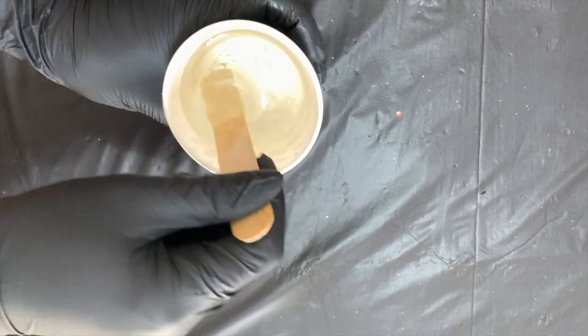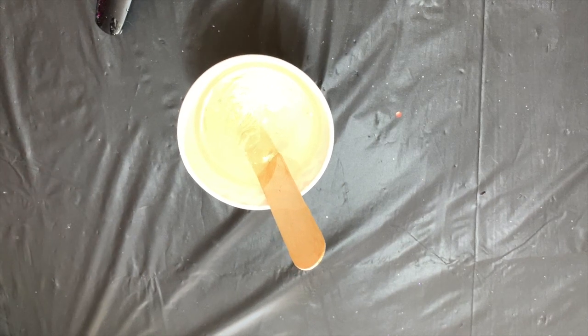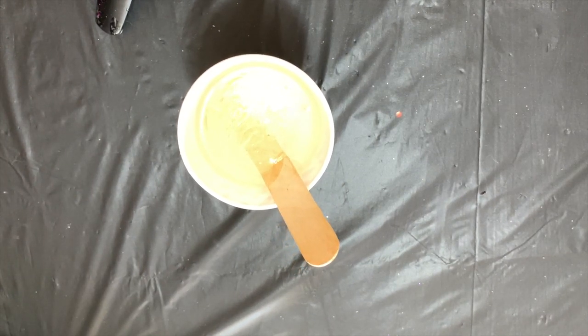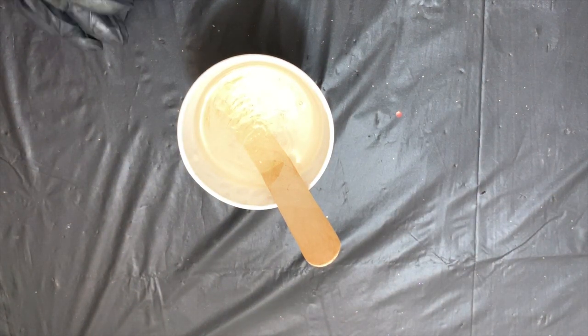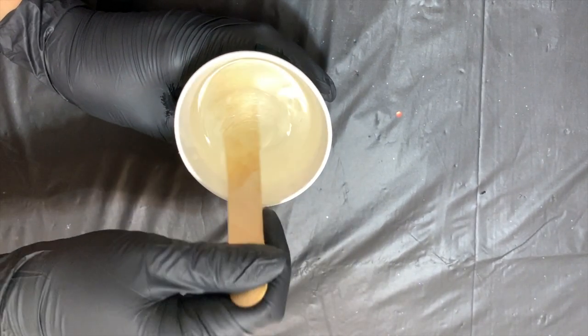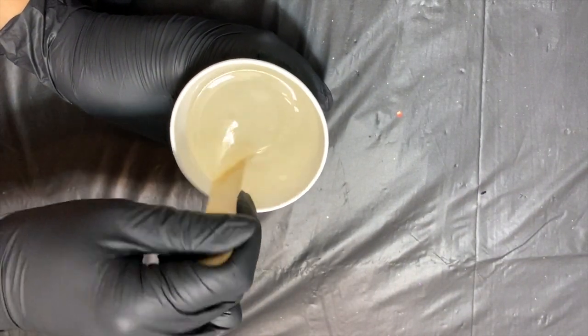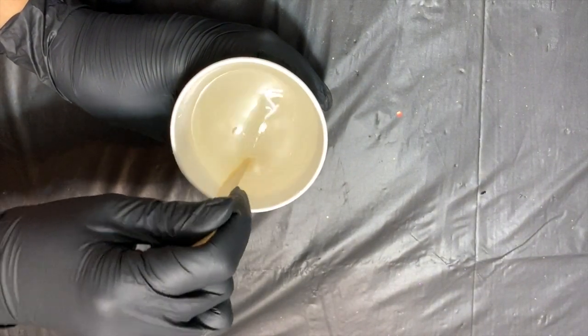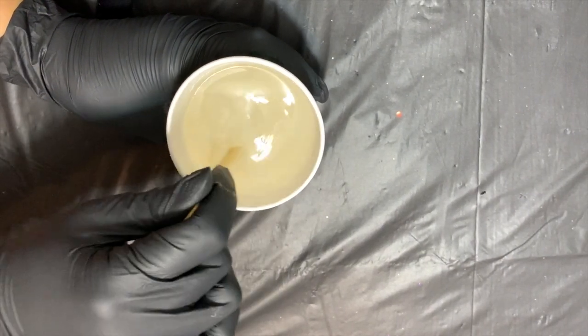The resin I'm using today is Stone Coat Countertops Epoxy Resin. It is a one-to-one ratio, which means I will be using the exact same amount of part A and the exact same amount of part B. Part A is thick and this is the resin. This can vary depending on the maker. I've actually had some resins where the hardener is the thicker part. So just make sure you understand and pay attention to whichever part is thicker because this will actually play a part in the easier mixing process later.